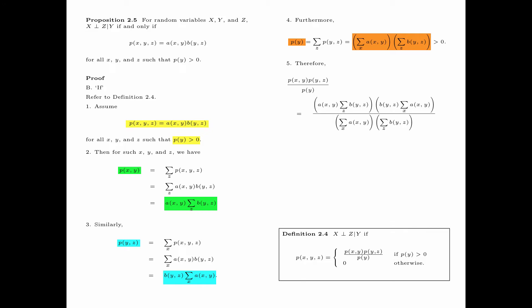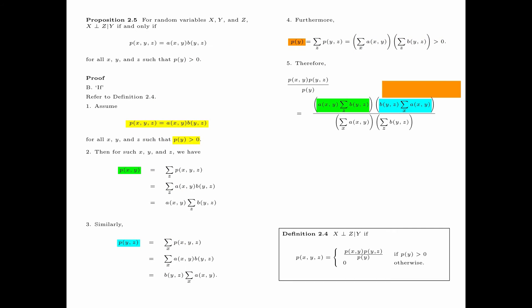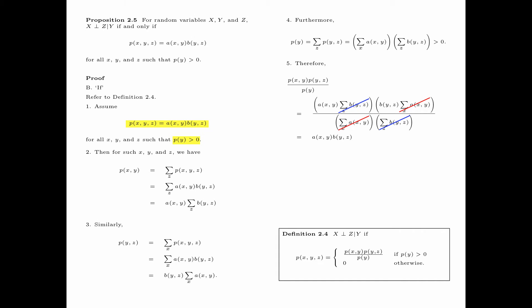Substituting these expressions, we obtain a rather complicated fraction, which is in fact straightforward to simplify. We observe that the summation over x of a(x,y) in the numerator can be cancelled with the summation over x of a(x,y) in the denominator — this is possible because we have seen that this summation is not equal to 0. At the same time, the summation over z of b(y,z) in the numerator can be cancelled with the summation over z of b(y,z) in the denominator. What remains is a(x,y) times b(y,z), which by our assumption equals p(x,y,z). So we have shown that p(x,y,z) equals p(x,y) times p(y,z) divided by p(y), which is precisely the first case in Definition 2.4.